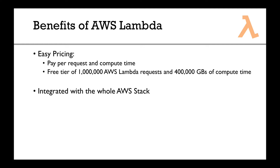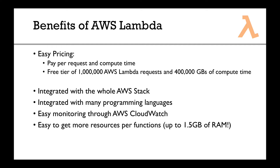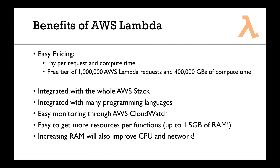Lambda is also integrated with the whole AWS stack, which we'll see shortly. It's integrated with many programming languages. It's very easy to monitor through AWS CloudWatch — no need to look at server logs, the logs are directly in CloudWatch. It's easy to get more resources per function: you can scale from 100 megabytes of RAM to 1.5 gigabytes of RAM. And if you increase your RAM, you also improve your CPU and network bandwidth performance — scale one thing and everything else scales with it.